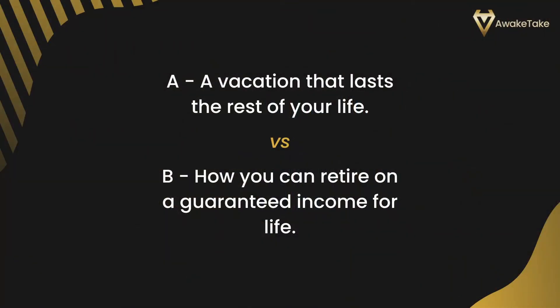Then we have headline three, the last one, with two options. Option A is 'A vacation that lasts the rest of your life,' and Option B is 'How you can retire on a guaranteed income for life.' In this case B wins because it selects the right audience and promises a benefit, while A lacks clarity and might be a bit misleading — it could be retirement or it could be promoting a trip to another country, so it is a bit vague.